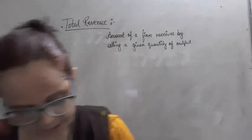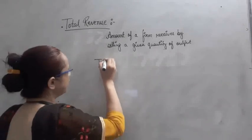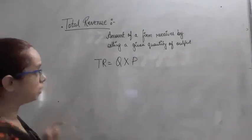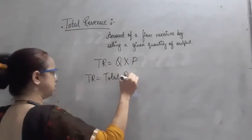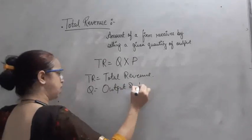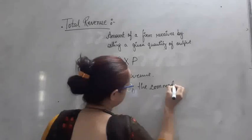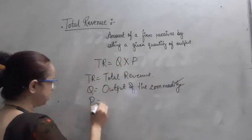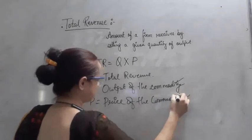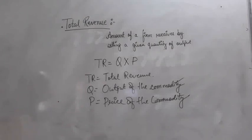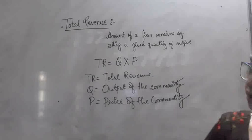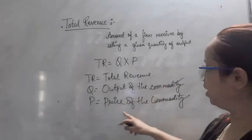So total revenue is the product of quantity (Q) and price (P) of the commodity. The formula is: TR = Q × P. We can also write price as AR, so TR = Q × AR.